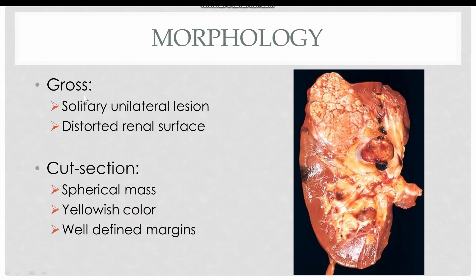Regarding morphology, clear cell carcinoma is solitary and present in only one kidney. The external surface of the kidney appears distorted due to the underlying tumor. The cut section reveals a spherical mass that is yellowish in color due to the presence of lipids inside the cells, and the margins are well-defined, making it easy to differentiate the tumor from normal kidney parenchyma.